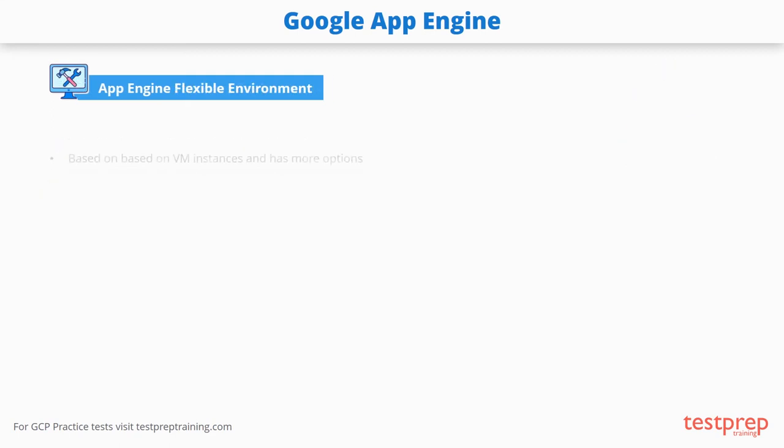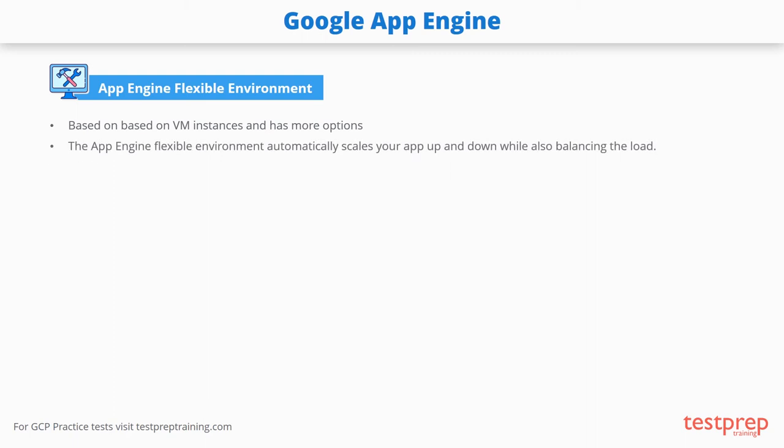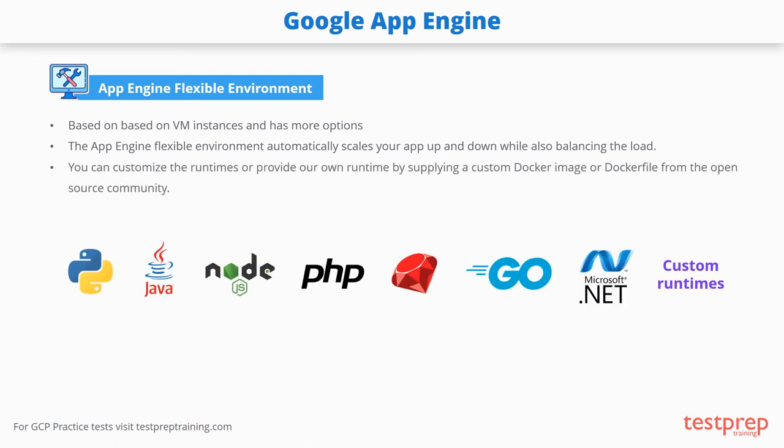The flexible environment is based on VM instances and has more options. The App Engine flexible environment automatically scales your app up and down while also balancing the load. You can customize the runtimes, or provide your own runtime, by supplying a custom Docker image or Dockerfile from the open source community.